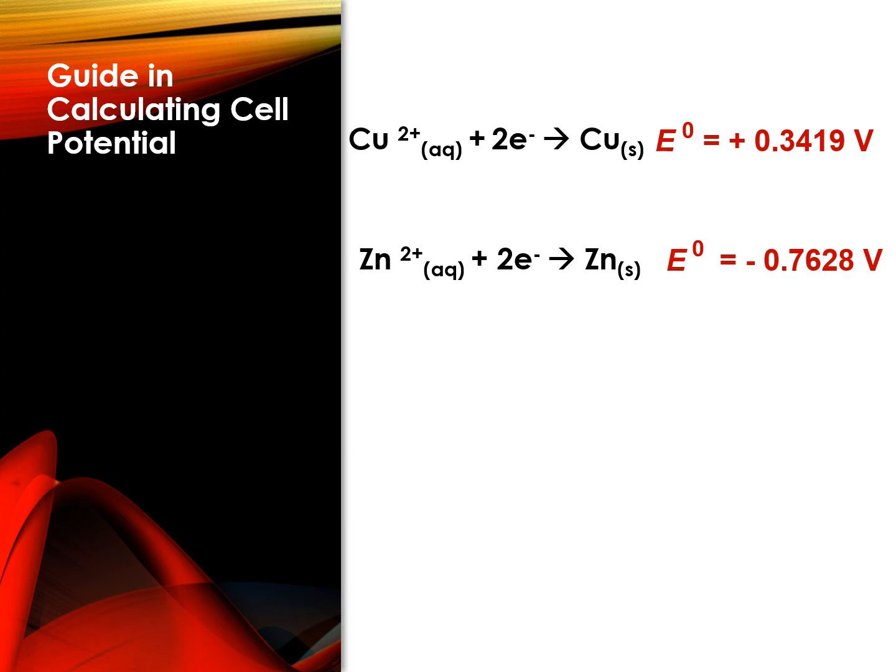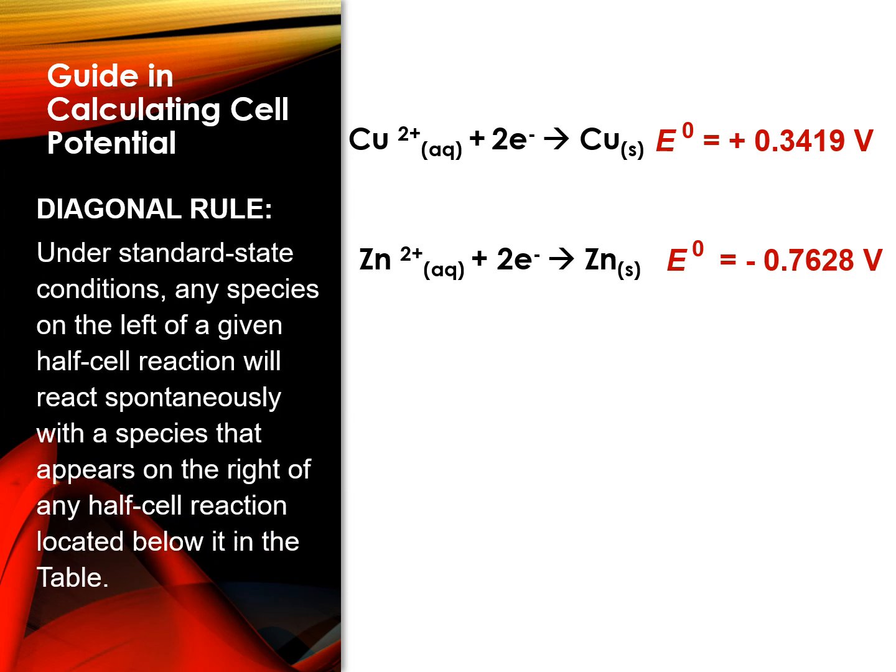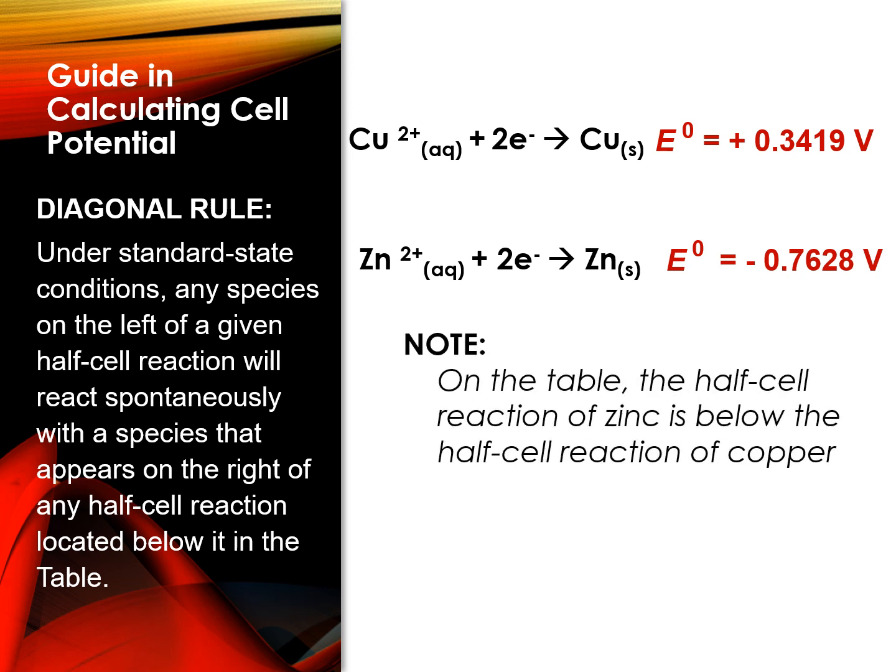To predict which will be the oxidation or reduction reaction, you can use the diagonal rule. FYI, under standard state conditions, any species on the left of a given half-cell reaction will react spontaneously with a species that appears on the right of any half-cell reaction located below it in the table. Recall that the first half-cell, Cu2+ plus 2e- into Cu is located above the second half-cell reaction, Zn2+ plus 2e- into Zn.